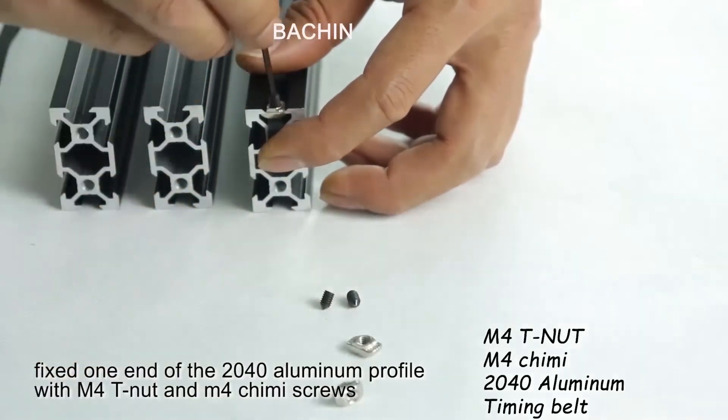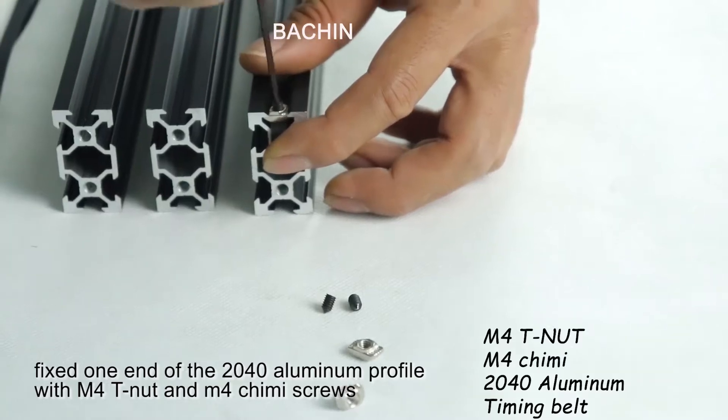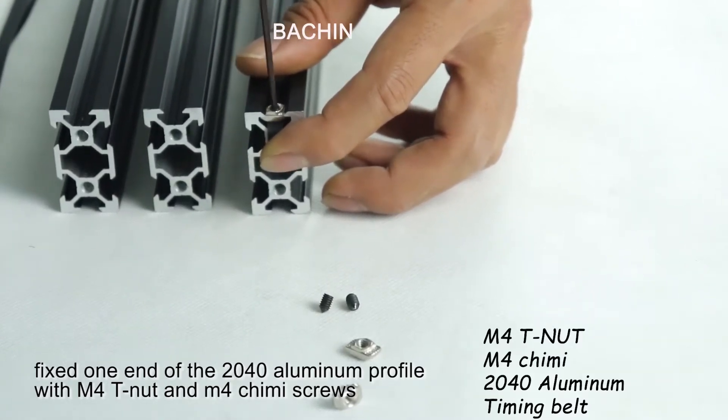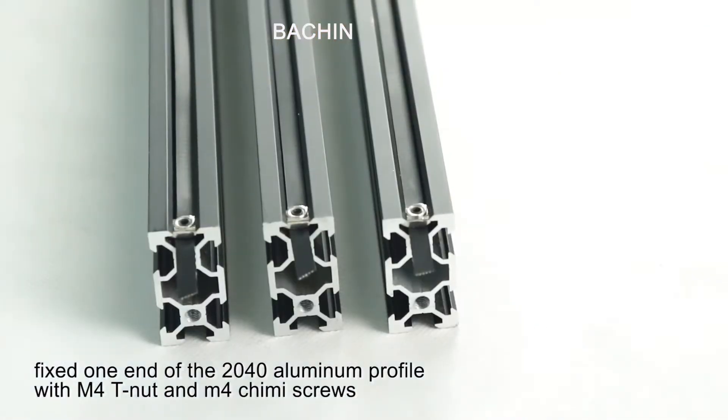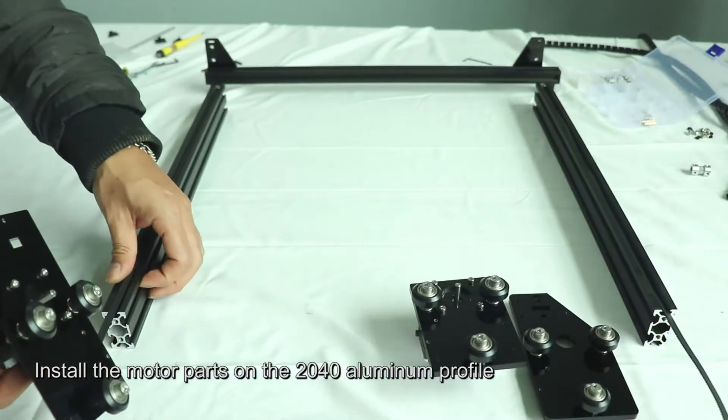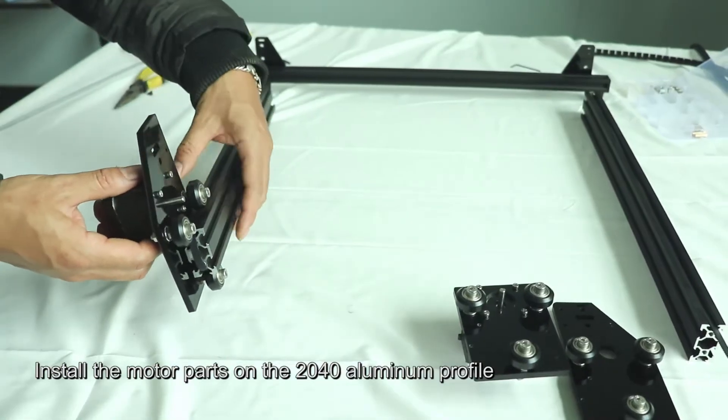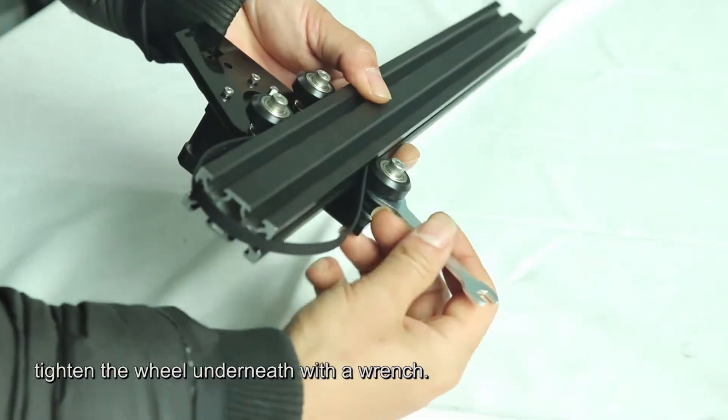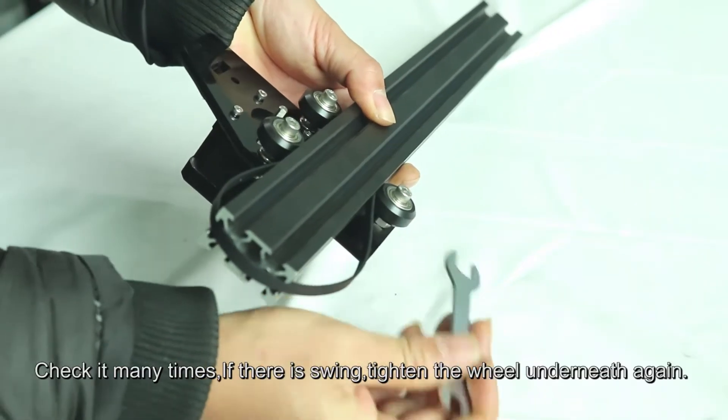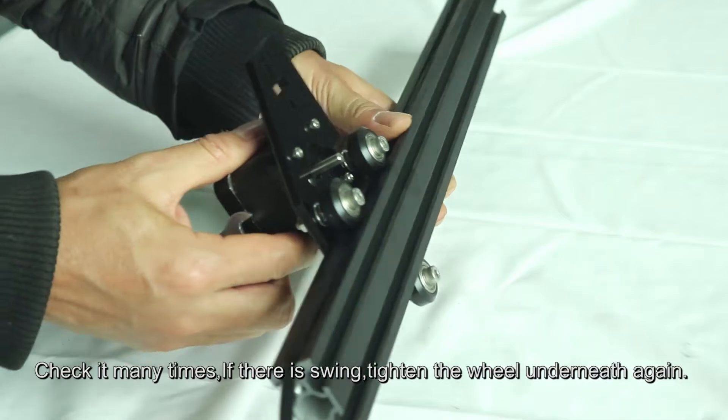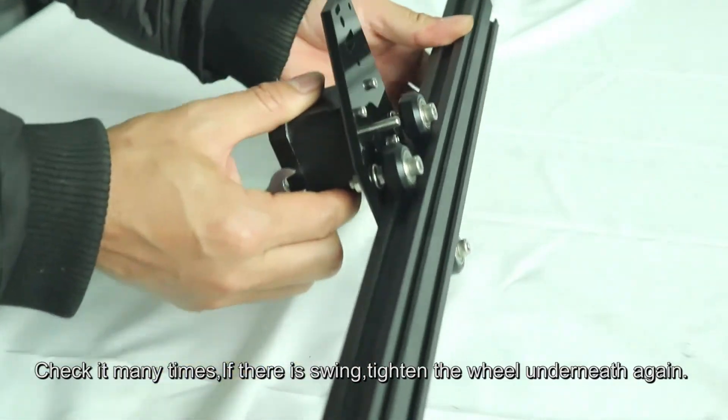Fix one end of the 2040 aluminum profile with M4 T nut and M4 screws. Install the motor parts on the 2040 aluminum profile. Tighten the wheel underneath with a wrench. Check many times if there is swing, tighten the wheel underneath again.